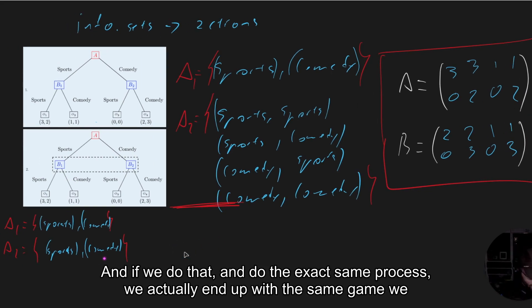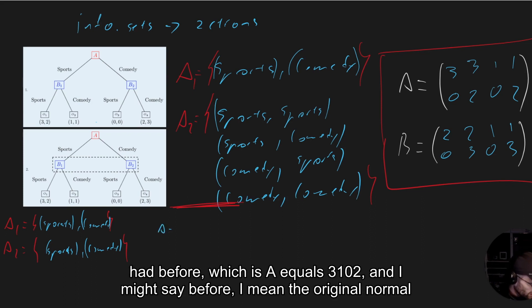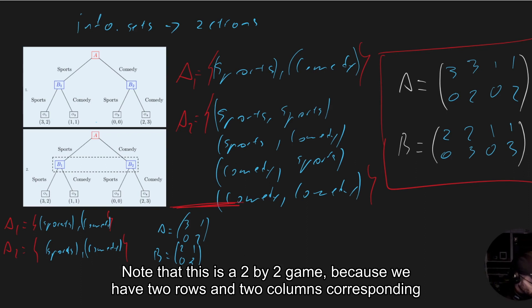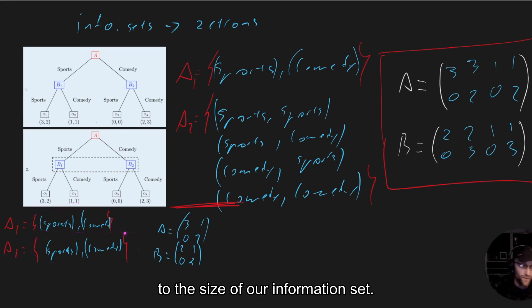And if we do that and do the exact same process, we actually end up with the same game we had before, which is A equals three, one, zero, two. And I might say before, I mean the original normal form game that we've been using as a counter example, so to speak, two, one, zero, three. Note that this is a two by two game because we have two rows and two columns corresponding to the size of our information sets.